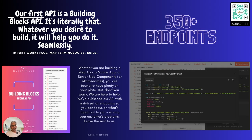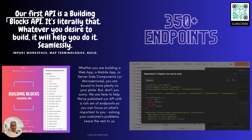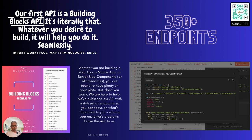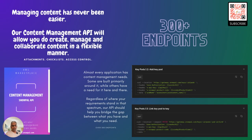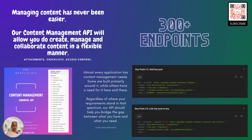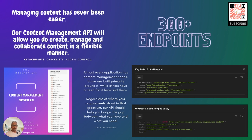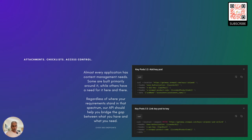The Building Blocks API has over 350 endpoints and is a pretty good starting point for solving generic problems. The Content Management API has over 300 endpoints. If you're building content management solutions or solutions that have a need for some variation of content management, then this is going to be pretty useful for you.